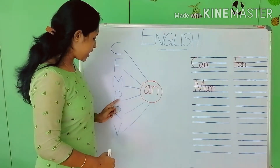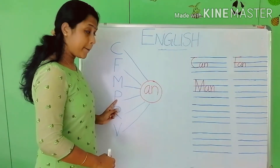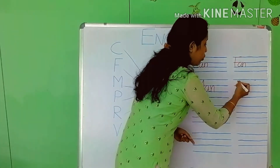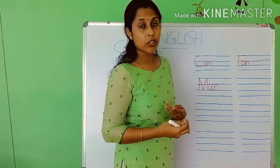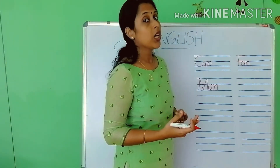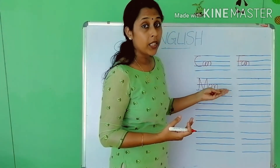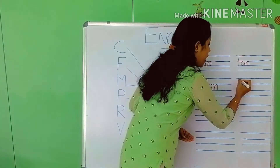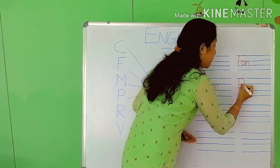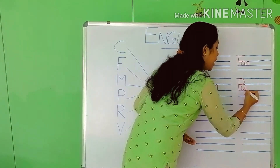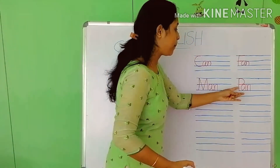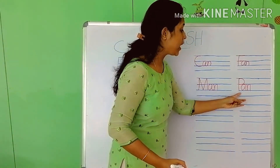The next word is P, AN — 'pan'. Write the word 'pan'. Which is the first alphabet? P. Write P, then AN — A and N. P-A-N — 'pan'.